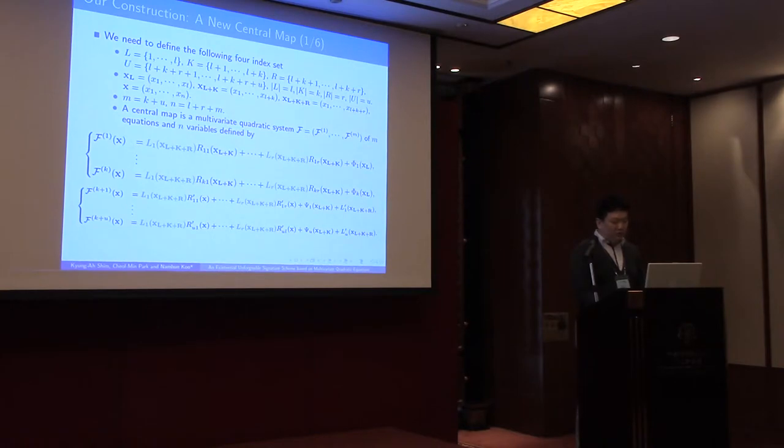There are four index sets, L, K, R, U. And this expression means the tuple of all variables in this index set in the subscript. And M and N are determined like this, where M is the number of equations and N is the number of variables in public map and central map. Then the central map is determined like this.